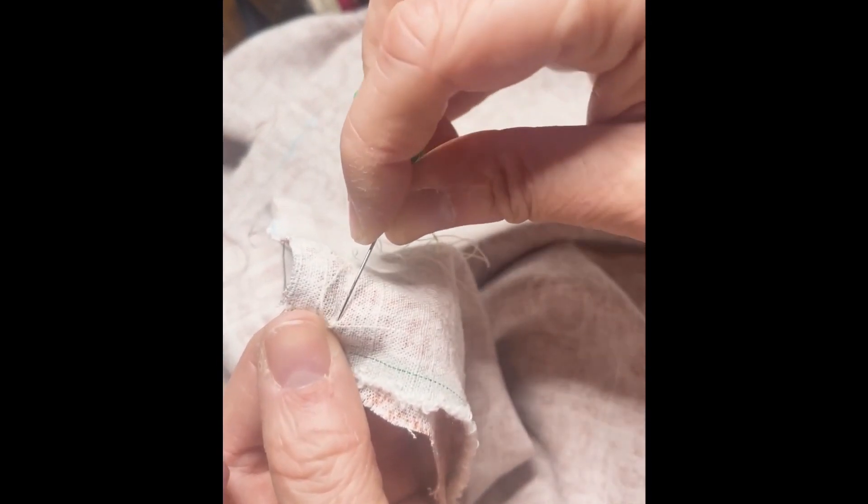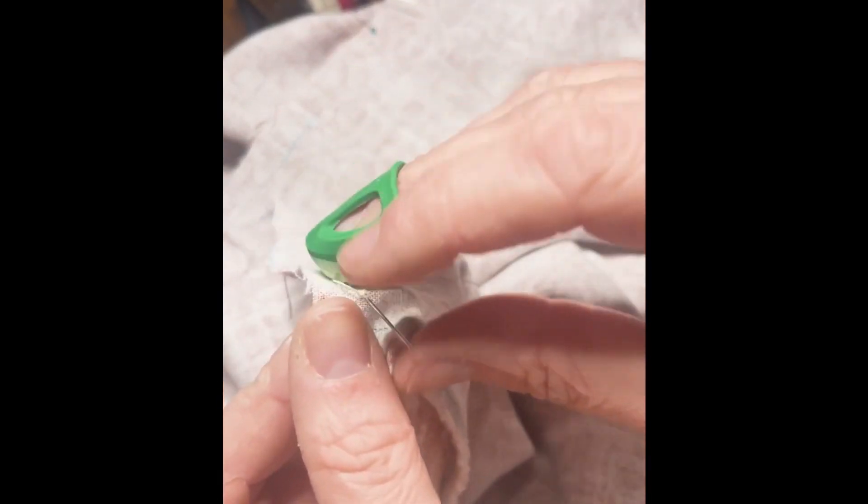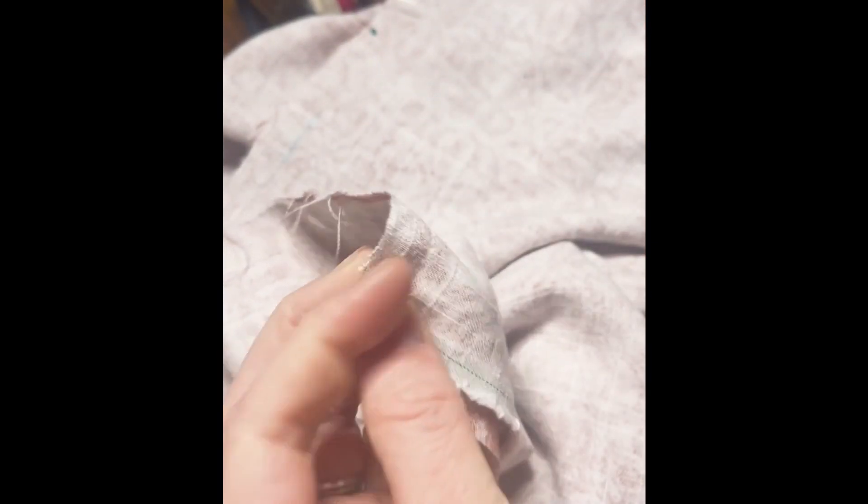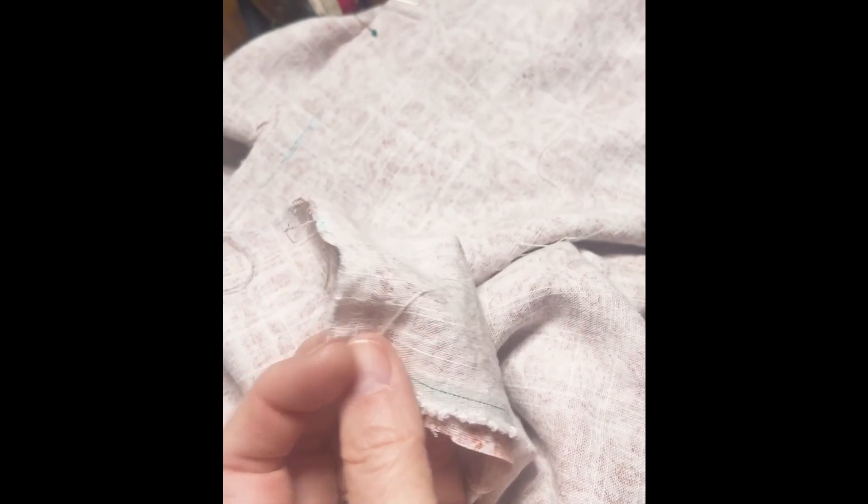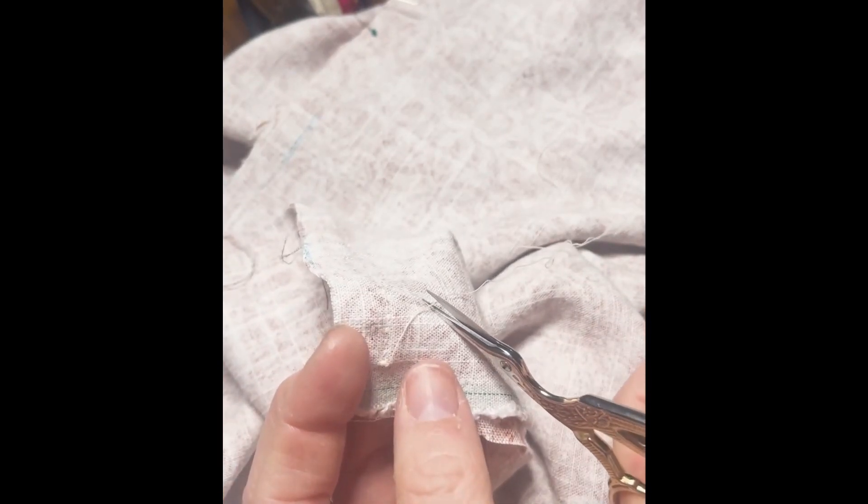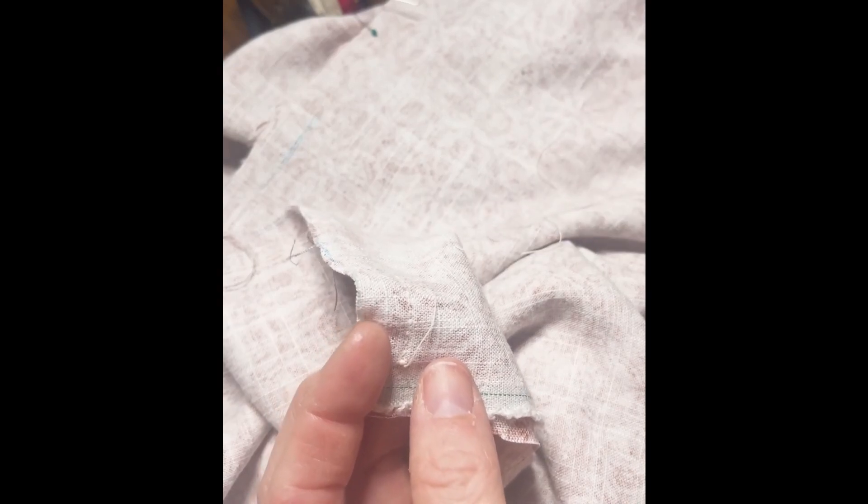And I think I did three stitches. You want to do three or four stitches right in the same spot to make it a nice sturdy knot. And then cut your tail and make sure you leave about an inch. We will take care of those tails when we finish our seams.